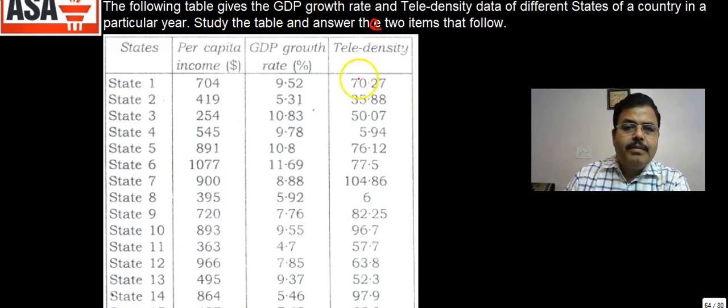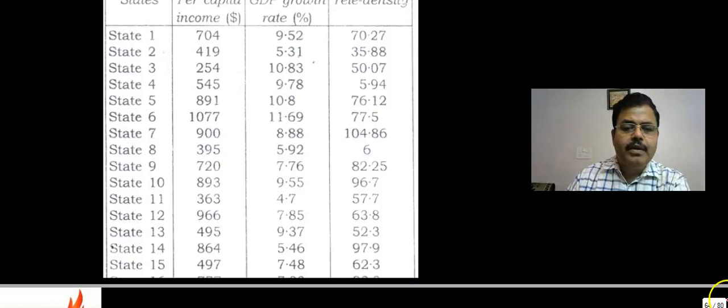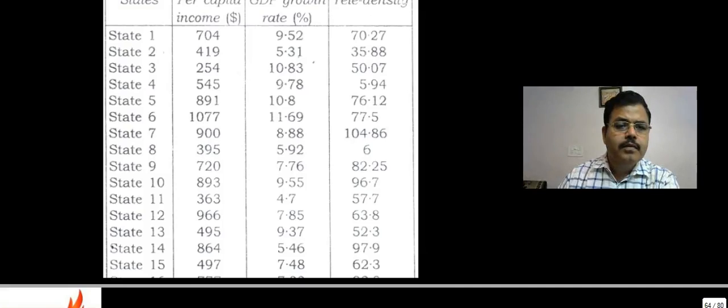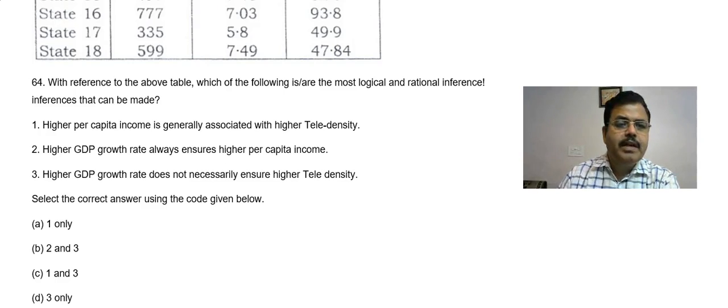Now on the basis of this you have to write some answer. The first question is: with reference to the above table, which of the following is the most logical and rational inference that can be made? Higher per capita income is generally associated with higher tele-density. Is it correct?